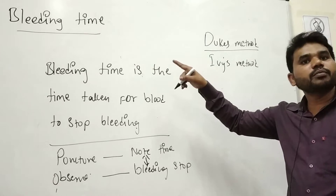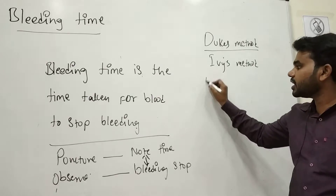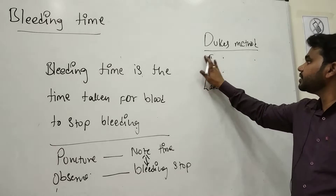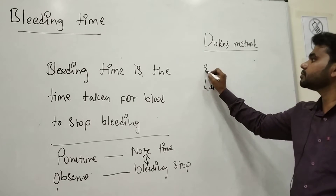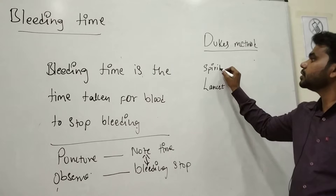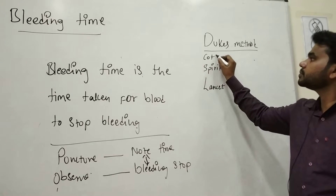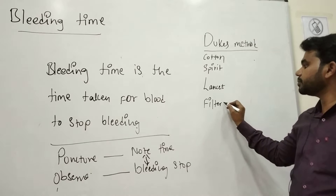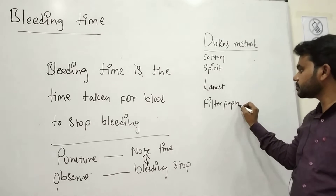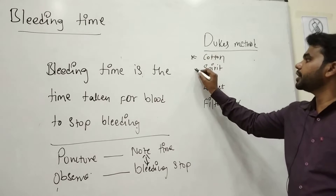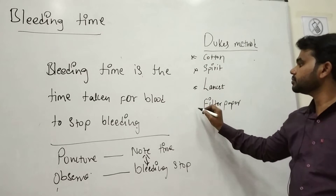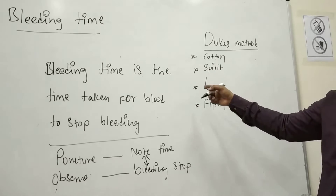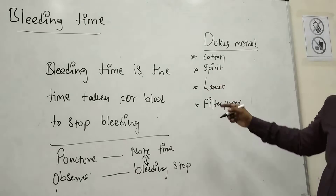In the Dukes method to perform bleeding time, we need a set of apparatus like lancet, spirit, and cotton. We need these four items: cotton, spirit, lancet, and spirit swab. First thing is cotton, second one is spirit, then lancet.